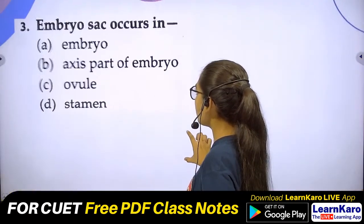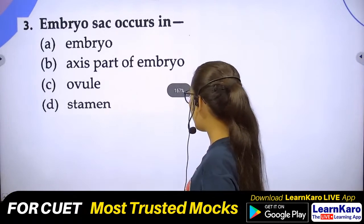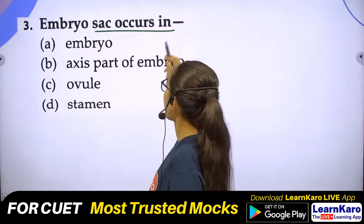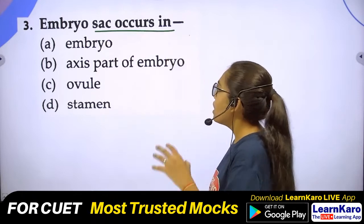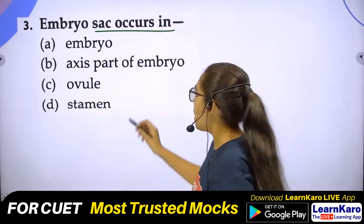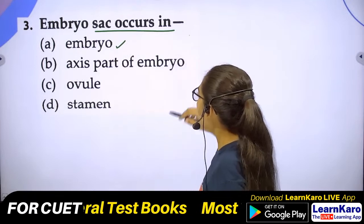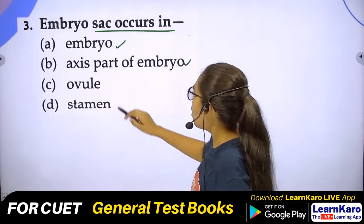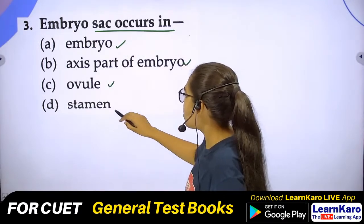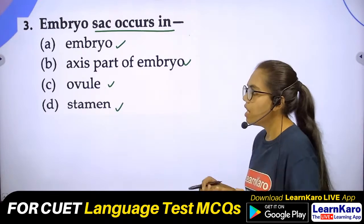Next question: Embryo sac occurs in — what part? The options given include parts of the embryo. Option C is ovule and Option D is stamen. The correct answer is Option C — the embryo sac is present in the ovule.